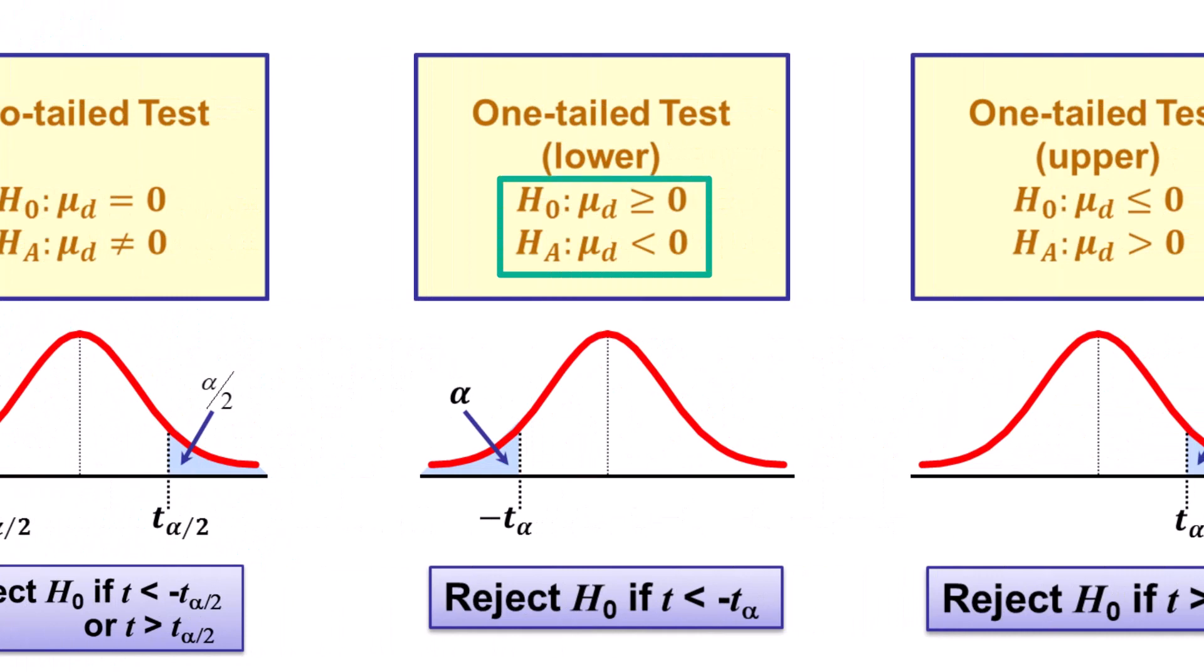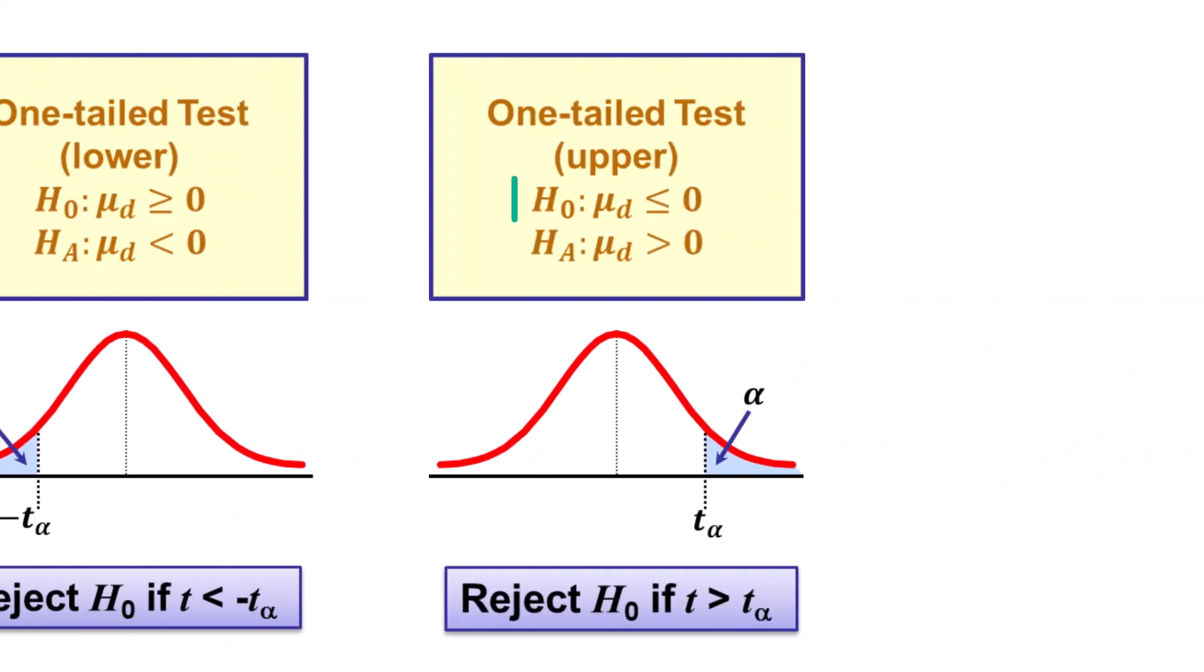For the one-tailed lower test, the alternative hypothesis is that the mean difference is less than zero, so on the left tail. Again, I'm focusing on the alternative hypothesis so it's easier to identify that it's a lower one-tailed test. Then for the one-tailed upper test, the alternative hypothesis is that the mean difference is greater than zero, so on the right tail.